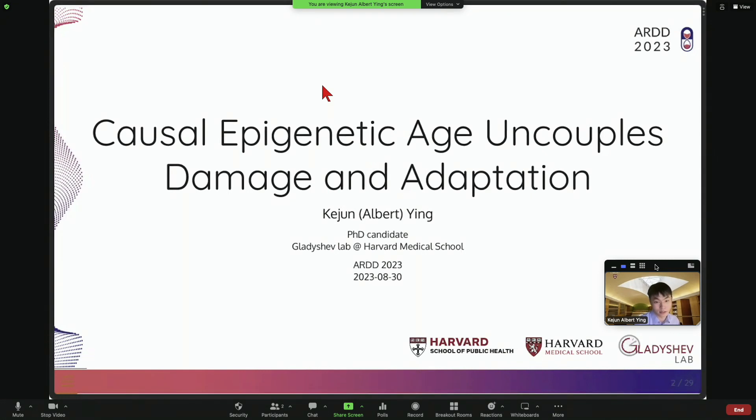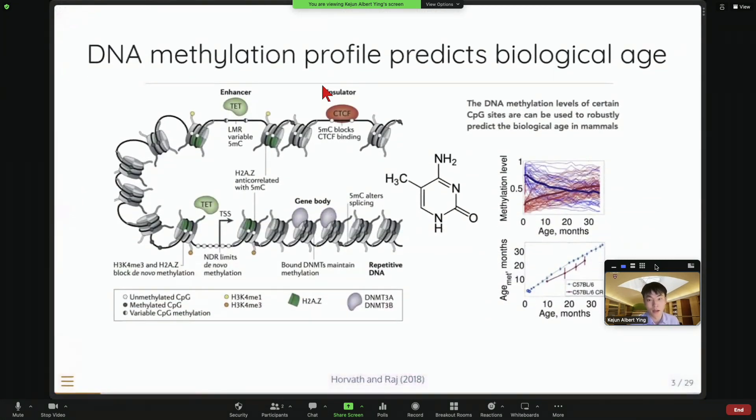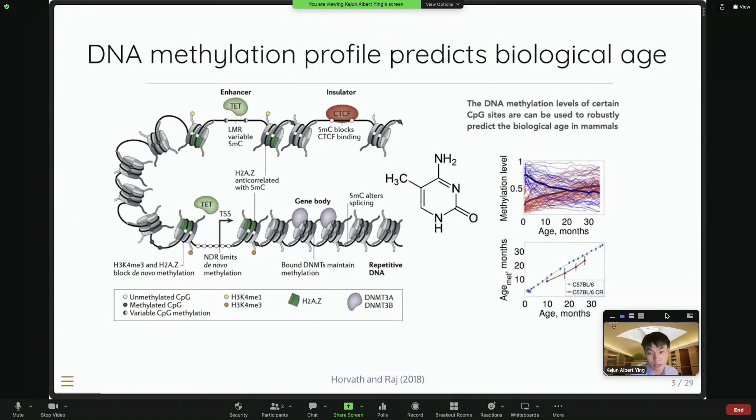So DNA methylation really changes during aging. And as the previous speaker already introduced, we know that when we combine this information with machine learning technique, we can predict a highly accurate algorithm that is able to predict the age of the sample. It's so accurate, we call it epigenetic clock.